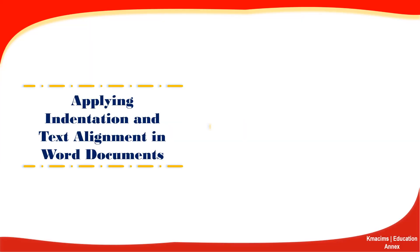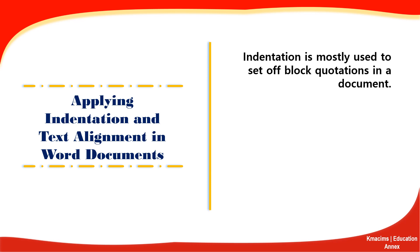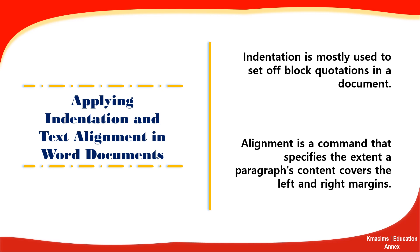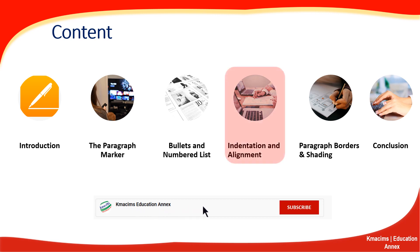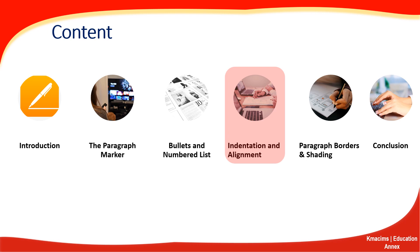Indentation is mostly used to set off block quotations in a document; in this case, either the left or both left and right margins will be set off. Alignment is a command that specifies how a paragraph's content crosses the left and right margins. When formatting paragraphs, indentation and text alignments are important because they make documents presentable. In this section, you'll learn how to apply indentation and text alignments in your Word document.